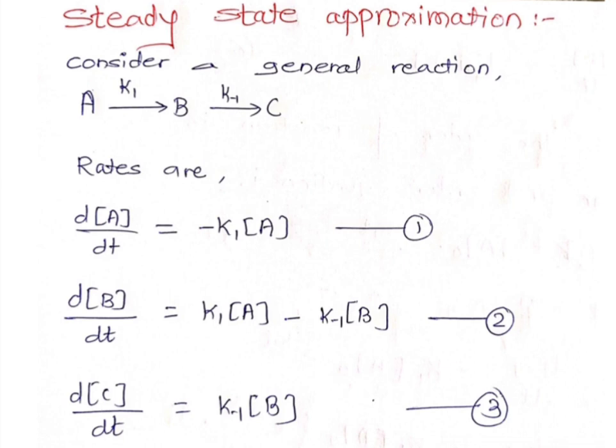Initially we are going to write down the rates of reactions, as in previous lectures. Three terms are involved: A, B, and C. A is the reactant, B is the intermediate species, and C is the product. The rate for species A: the change in concentration of A with respect to time equals minus K1 times concentration of A, because concentration of A is decreasing to form species B, so the sign is negative.